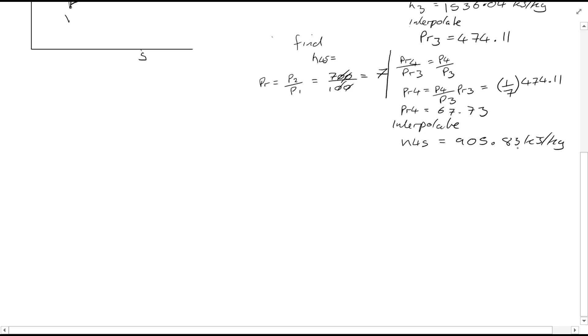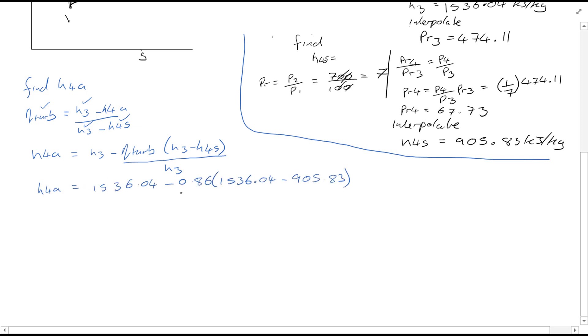Now of course it's really important to note that this is the isentropic point, H4S that we've found, because the pressure ratio has been used. So now we have H4S, we can find H4A, since we've been given the isentropic efficiency of the turbine. So you can rearrange this now to find H4A, because we've got the values of H3, and the value of H4S, and the value of isentropic efficiency of the turbine. So H4A is equal to, so subbing in the values you'll find, and that will give you a value of H4A equal to 994.05 kJ per kg.